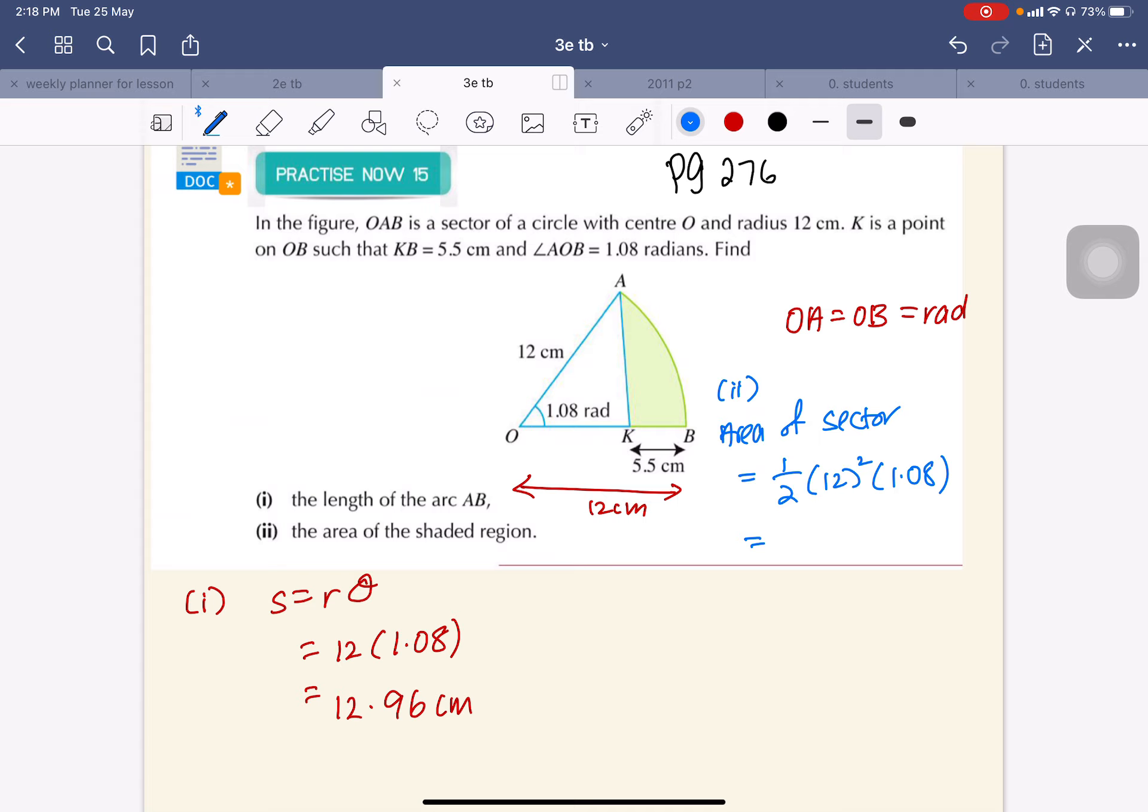So this is 77.76. Next, the area of the triangle.